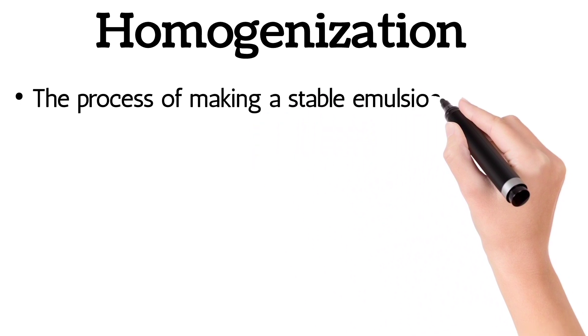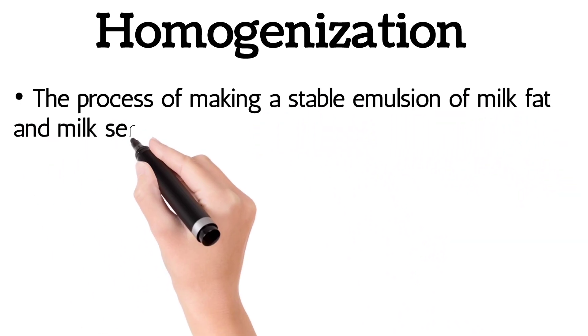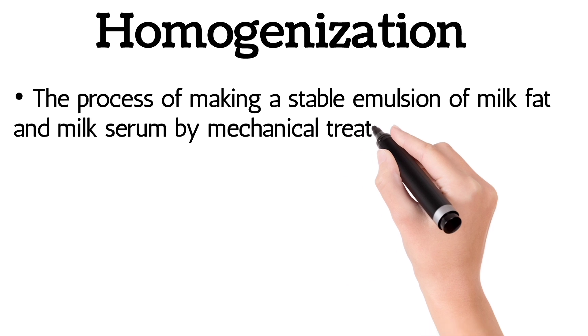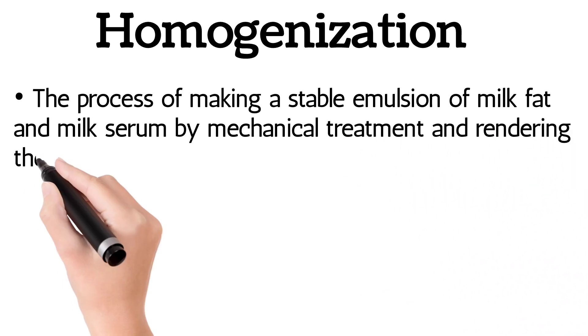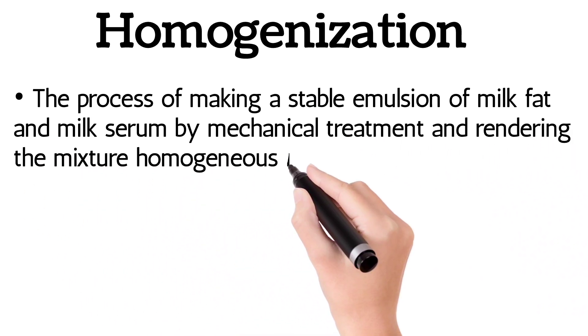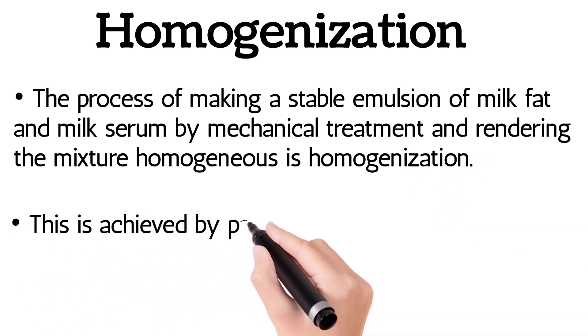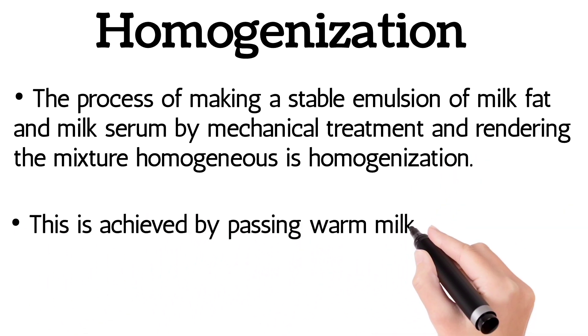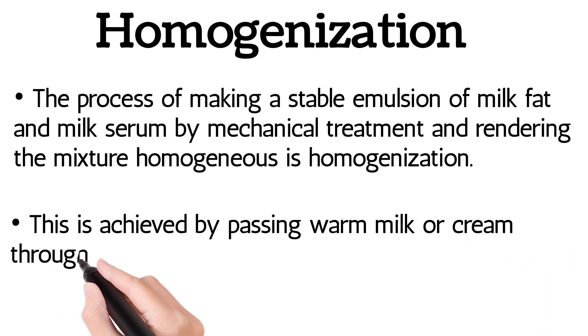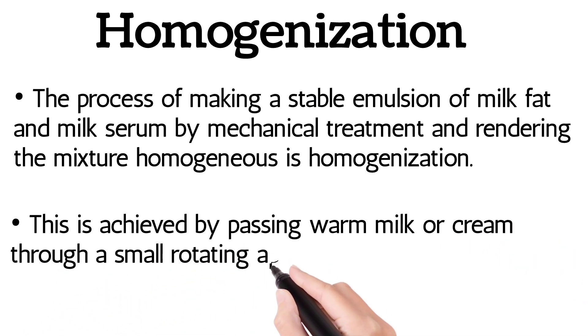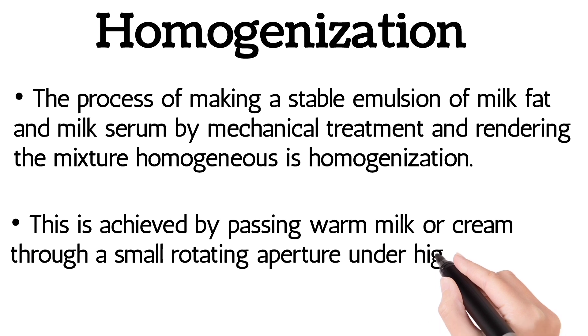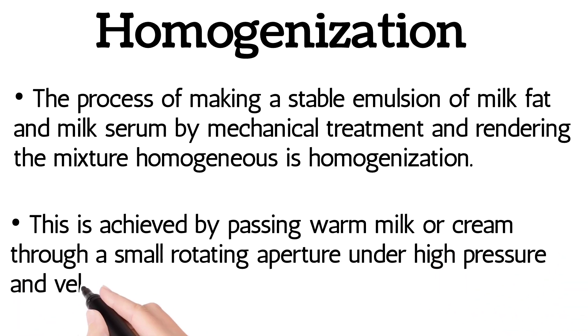Homogenization is the process of making a stable emulsion of milk fat and milk serum by mechanical treatment and rendering the mixture homogeneous. This is achieved by passing warm milk or cream through a small rotating aperture under high pressure and velocity.